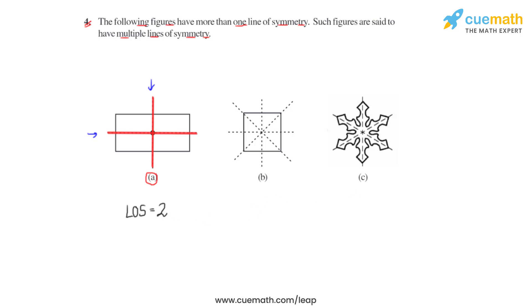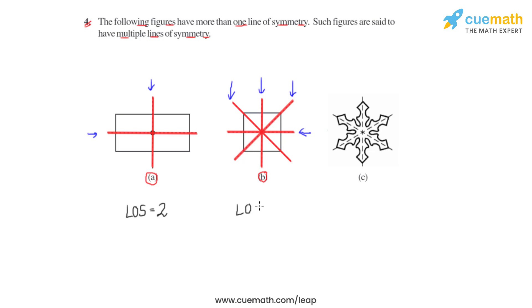Let us now move on to the next figure which is figure B. Figure B is nothing but a square, and based on the orientation of the square we have multiple lines of symmetry. In total we can say that we have four lines which mark the lines of symmetry for this particular square — so a square also has multiple lines of symmetry, that is four.